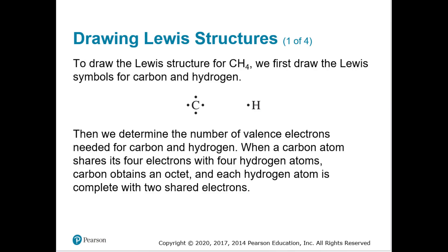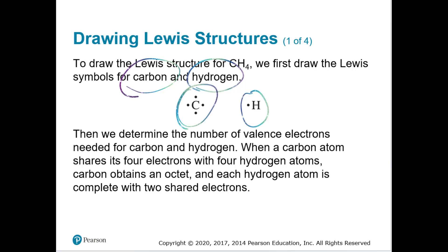To draw the Lewis structure for CH4, we first draw the Lewis symbols for each element — carbon and hydrogen. Looking at the periodic table, carbon has four dots, one on each side. Hydrogen has one dot.